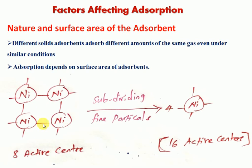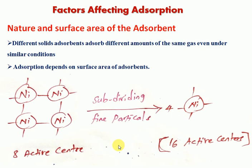For example, consider a nickel solid surface containing eight active centers. When sub-dividing and converting into fine particles, each fine particle contains four active centers. So four particles times four active centers gives sixteen active centers total. Therefore, adsorption increases when the adsorbent is in fine powder or smaller particle form.